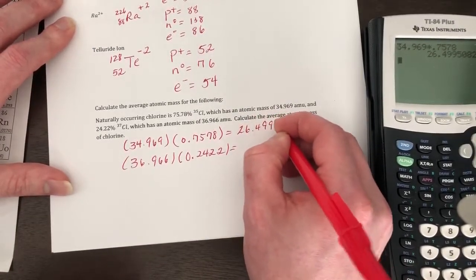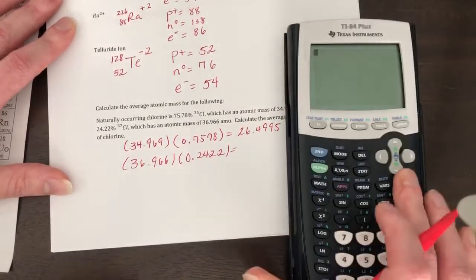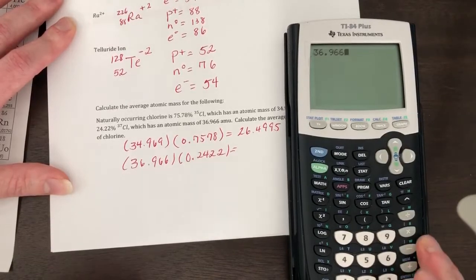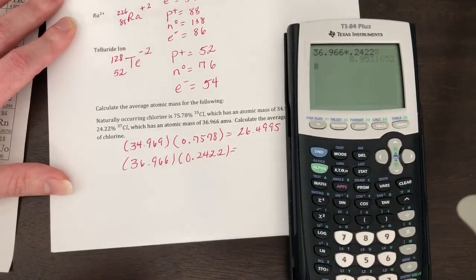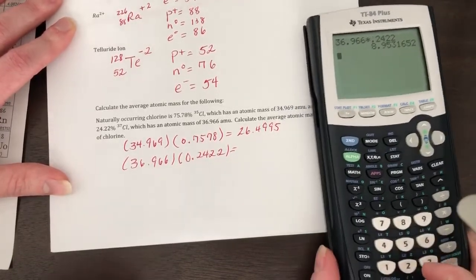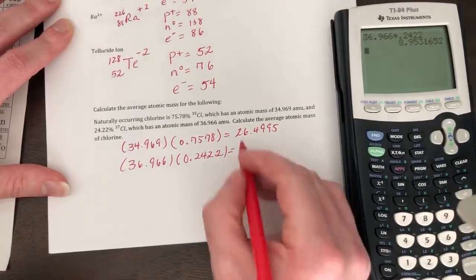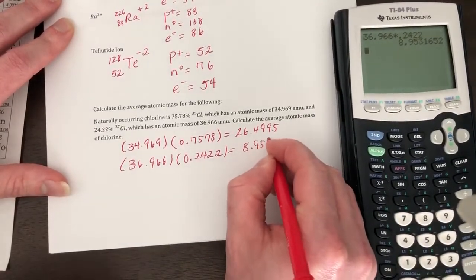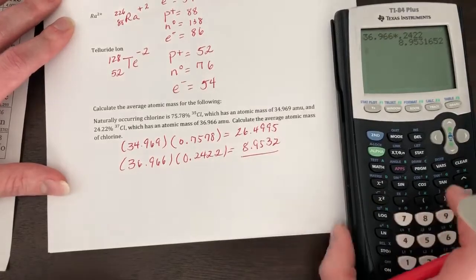26.4995. And then we did 36.966 times 0.2422, and you get 8.9532. And then we're gonna add down.